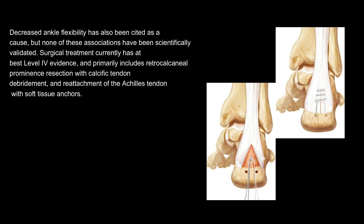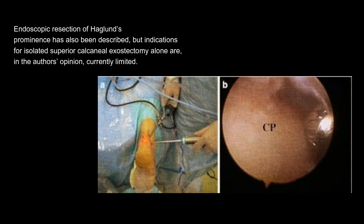Surgical treatment currently has at best level 4 evidence, and primarily includes retrocalcaneal prominence resection with calcific tendon debridement and reattachment of the Achilles tendon. Sole endoscopic resection of Haglund's prominence has also been described, but indications for isolated superior calcaneal exostectomy alone are, in the author's opinion, currently limited. An intraoperative photograph shows the burr placed on the calcaneal prominence (CP).